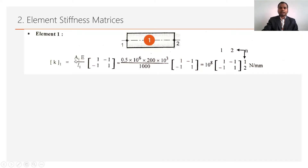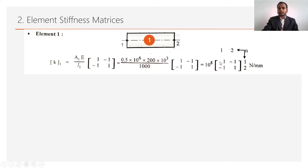Here, area and length differ per element, so we use A₁ × E / L₁. Putting in the values — area 0.5, modulus of elasticity 200 × 10³, and length 1000 — we get the matrix 10⁸ [1, -1; -1, 1]. We write the node numbers 1 and 2 above and to the right of the matrix; these will be used to assemble all matrices into the global stiffness matrix.